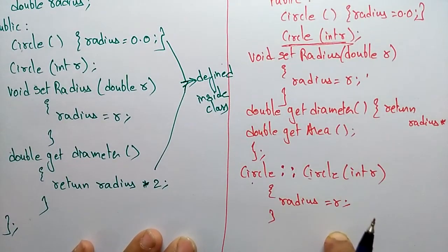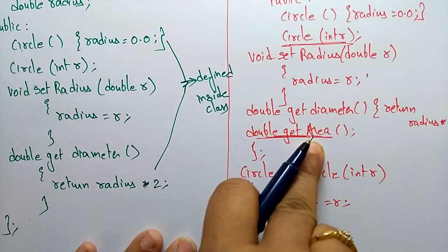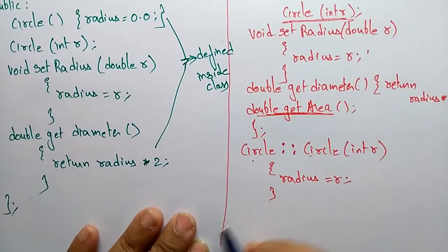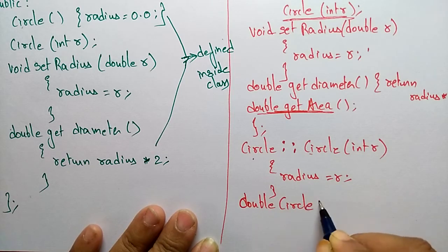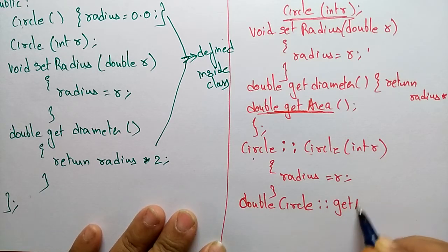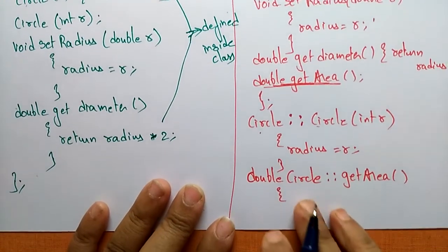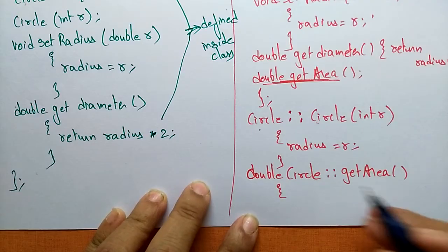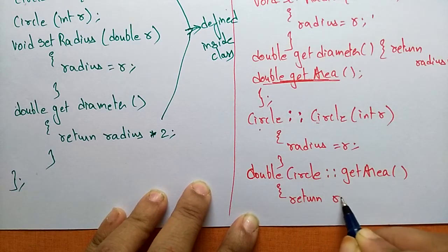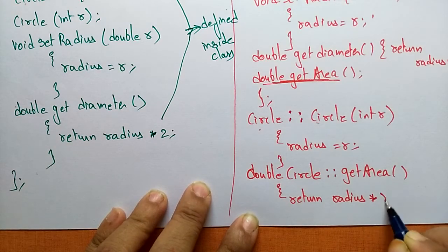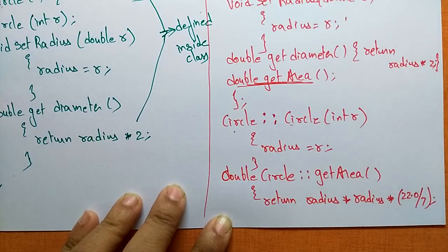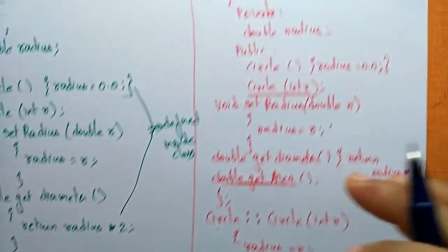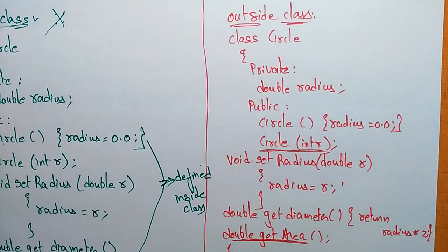Now I am calling the getArea function outside the class. Write: double Circle::getArea(). Inside getArea, I am writing the operation — return radius * radius * 22.0 / 7. This means I am adding a calculation that should be returned as the get area of this circle. This is how you define member functions outside the class.